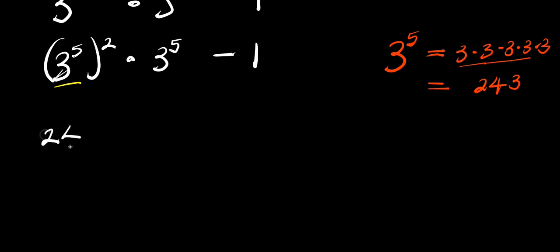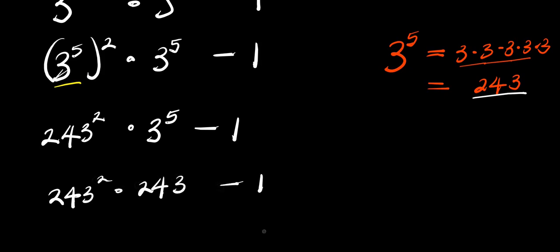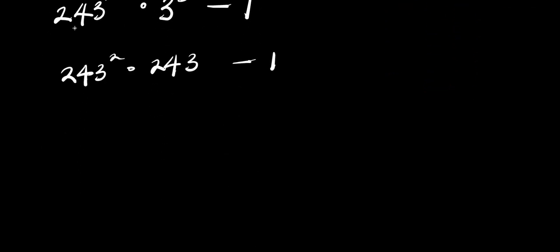We have 243 raised to the power of 2, times 3 power 5 minus 1. And we have already gotten 3 power 5 here, which is 243, so we have 243 raised to the power of 2, times 243, then minus 1. The next thing is to find the value of 243 power 2.